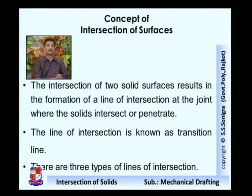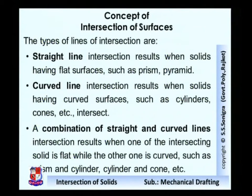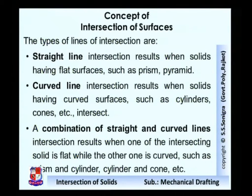There are three types of lines of intersection. The first is the straight line — straight line intersection results when two solids have flat surfaces, such as prism and pyramid. The second is the curved line — curved line intersection results when solids have curved surfaces, for example cylinders, cones, etc. The third is a combination of straight and curved lines — this occurs when one of the intersecting solids is flat while the other is curved. For example: intersection of prism and cylinder, intersection of cylinder and cone, intersection of cone and pyramid, cone and prism, etc.